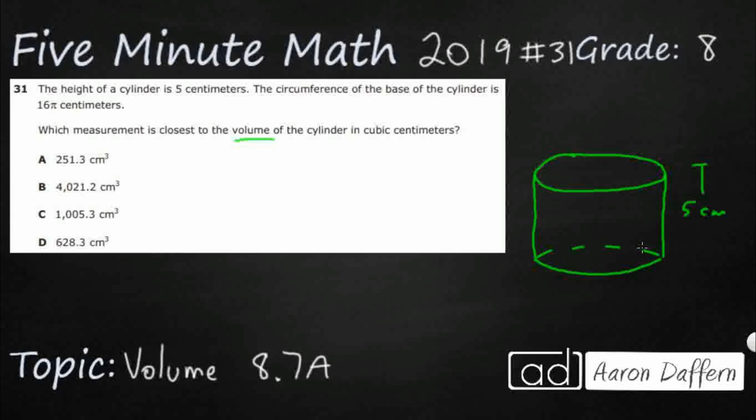5 centimeters. That's my height. That's what they typically give you when we do these types of problems. But they give me the circumference. Normally they're going to give me the diameter or the radius. So the circumference is around, kind of like the perimeter of a circle. And that's 16π, which is kind of weird.